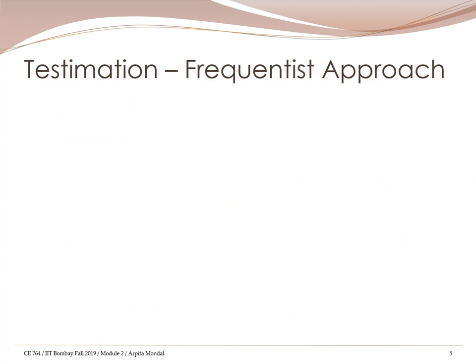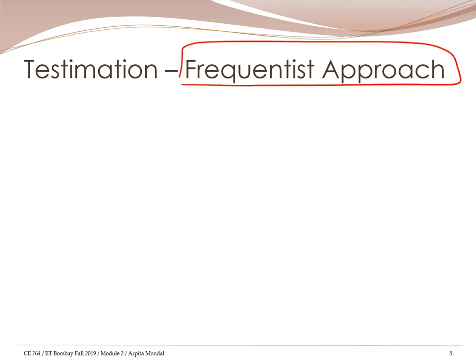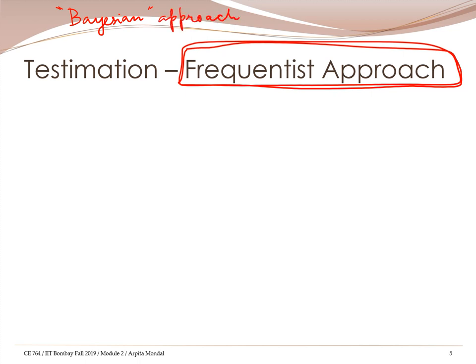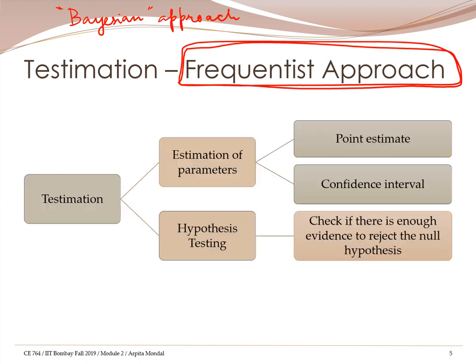There are two broad approaches to carry out estimation. One is the frequentist approach, which we will discuss in detail in this course. The alternate method is what is called the Bayesian approach, which unfortunately we are not going to discuss in this course.